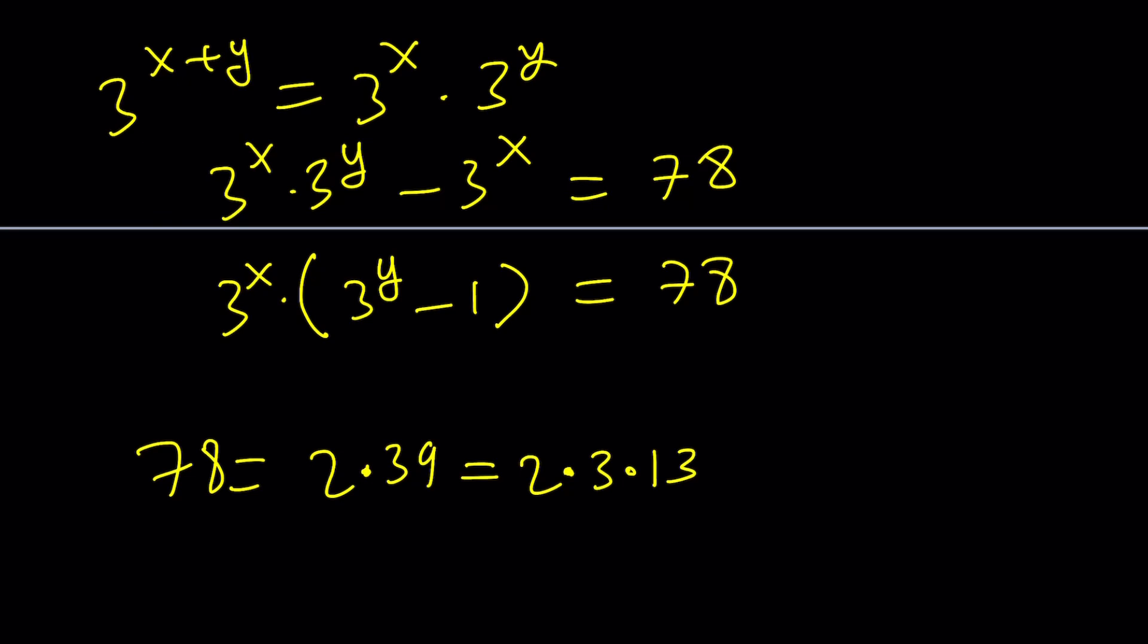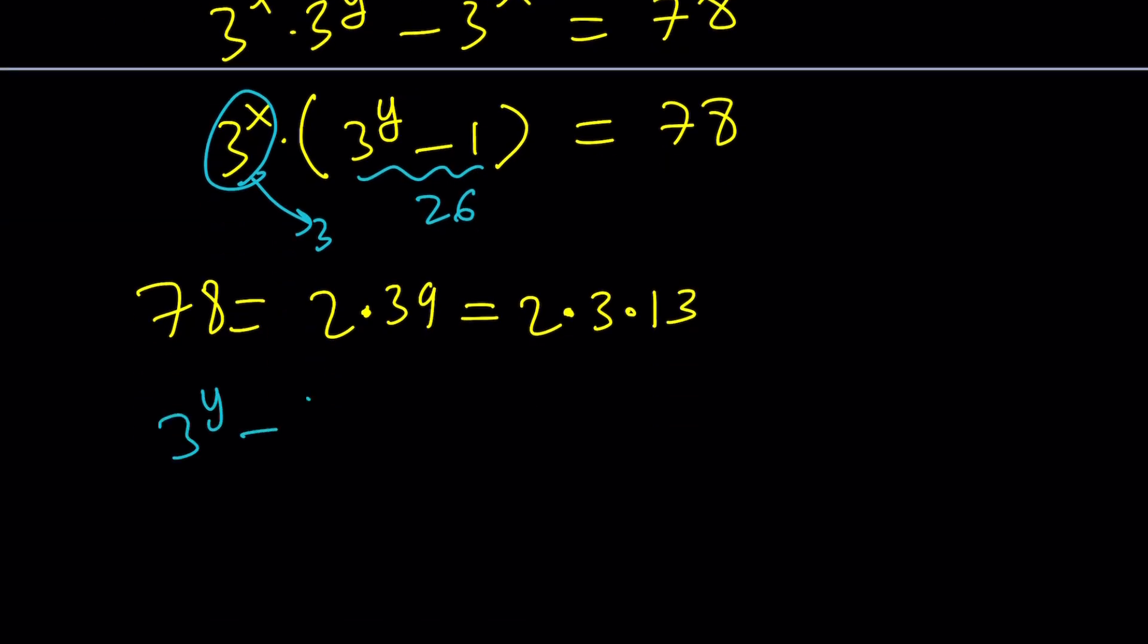Great. And if you look at these prime numbers, the only prime that has a power of 3 is 3. So this number must equal 3. Make sense? And of course, this has to be the rest, which is 26, because their product is supposed to be 78. And that also works, because if 3 to the y minus 1 is 26, this implies 3 to the y is 27, and from here, we get an integer solution.